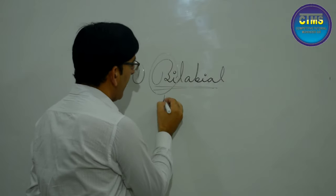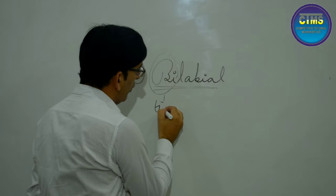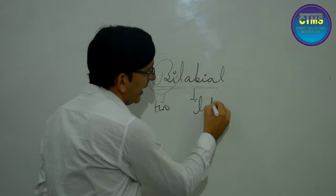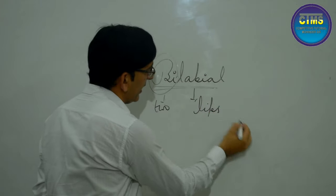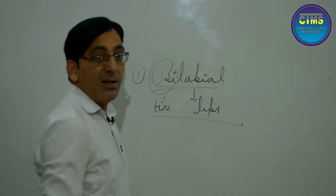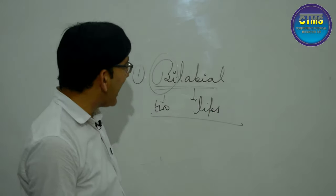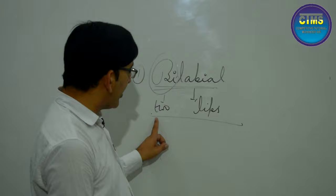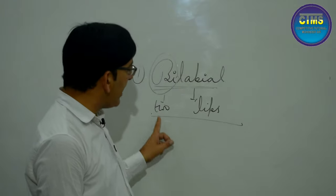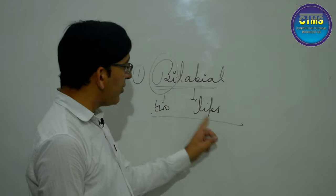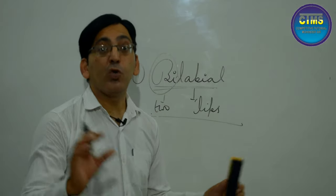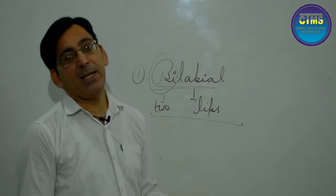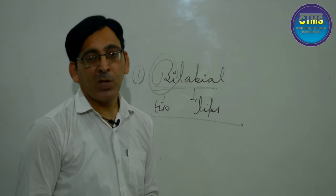The first term is bilabial. Bi means two, and labial is the adjective for lips. So bilabial means a consonant sound where two lips are used. The active articulator is the lower lip and the passive articulator is the upper lip. We call these bilabial sounds.